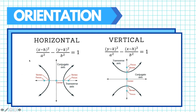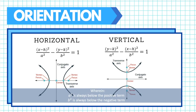For a horizontal hyperbola, the curves open to the right and to the left, while in a vertical hyperbola the opening is upwards and downwards. The value a squared is always the denominator of the positive term, while b squared is always the denominator of the negative term.